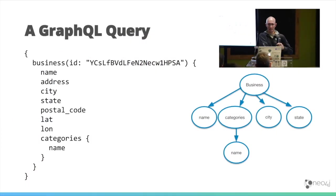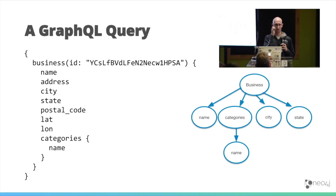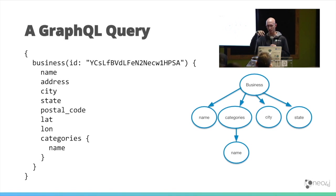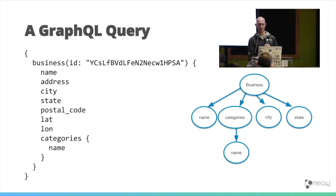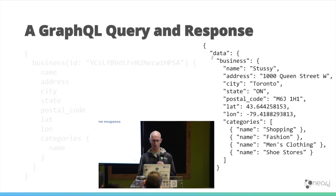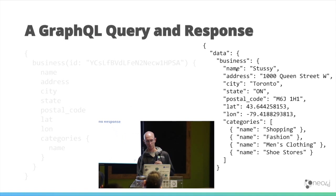If we imagine that as a graph, the GraphQL documentation talks a lot about structuring data this way. A business breaks down into components: name, categories, city, and state. The only one with another layer below it is categories, which has a name — all others are strings. In the response, under the data top level, we get our business with name, address, city, state, postal code, and so on.